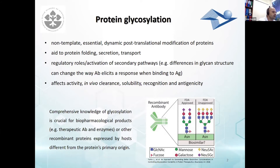Recombinant protein production in eukaryotic cells, which is often required for structural analysis, can result in the addition of glycans to their respective modification sites. This can be an advantage since the obtained glycoprotein resembles its native form, and it is crucial especially when the glycans are involved in protein function, like the mentioned ligand-receptor interaction. However, the immense variability and structural flexibility of glycans can also represent an obstacle in obtaining high-resolution structural data.